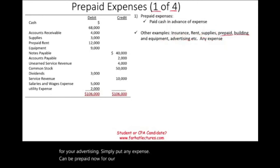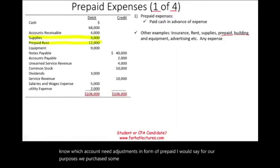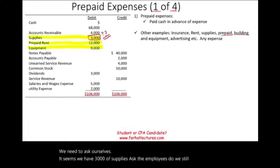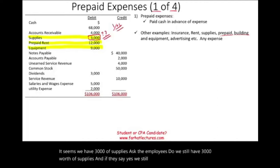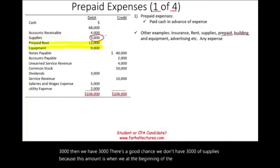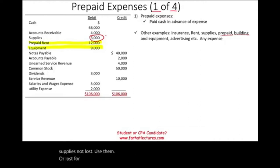You need to identify which accounts need adjustment in the form of prepaid. For our purposes, we purchased some supplies, prepaid rent, and we have equipment. We need to ask ourselves: we have $3,000 of supplies on the trial balance — do we still have $3,000? There's a good chance we don't, because that amount was recorded when we purchased the supplies. At the end of the period, some may have been used. If supplies were consumed, we have to reduce our supplies.